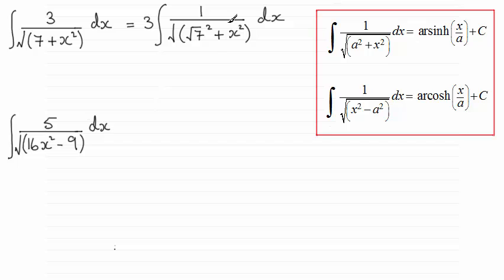So this now has this particular form where a is the root 7. So what we've got then is that this is going to be equal to that result there. We're going to have 3 arcsinh of x over a, so that's going to be x divided by a which is root 7. And not forgetting our constant of integration plus C.